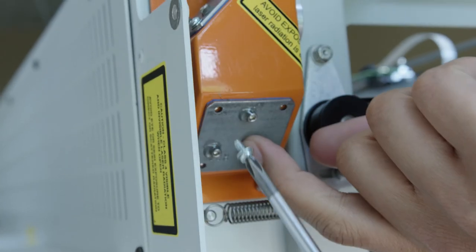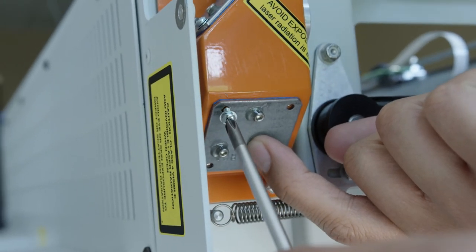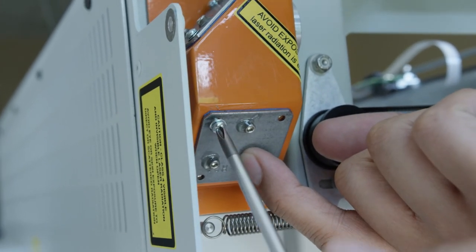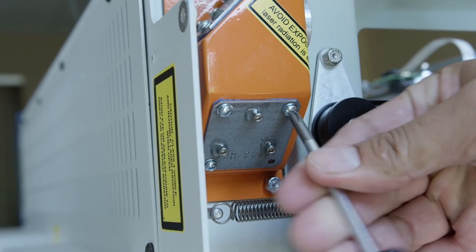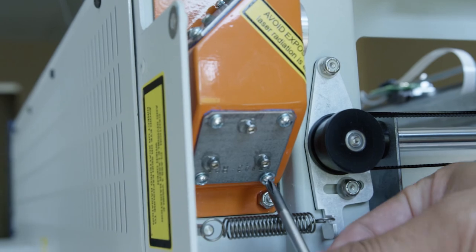Reinsert the mirror, positioning it so the two hex screws are near the bottom and one near the top. Reinsert the four Phillips-head screws loosely at first, tightening once everything is lined up.